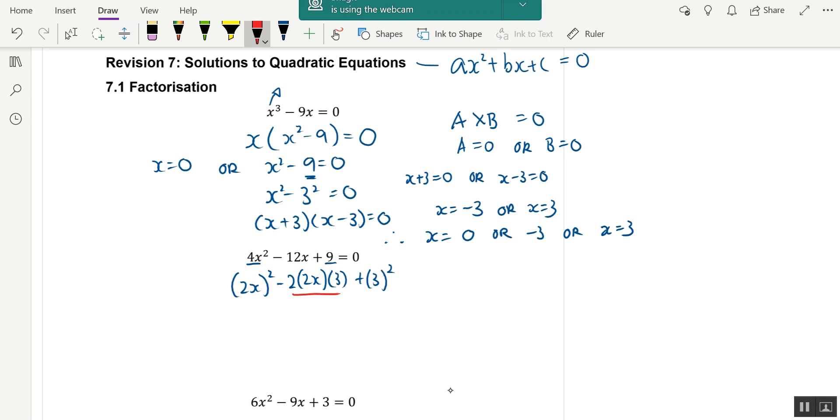Mentally, I think 2 times 2, 4. 4 times 3, 12. They are the same. If I can make them into this, a² minus 2ab plus b², what does it mean? When I factorize, it will become 2x minus 3 squared equals to 0.